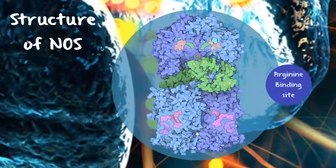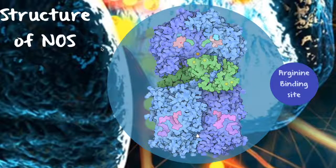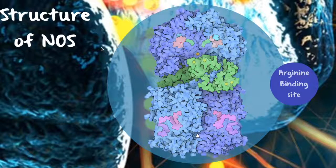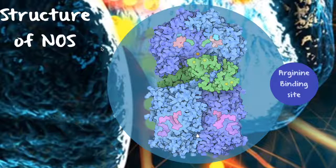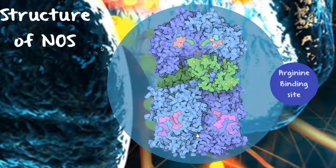Looking at the structure of nitric oxide synthase, all NOS proteins are homodimers and consist of an amino-terminal oxygenase domain and a carboxy-terminal reductase domain. The oxygenase domain creates nitric oxide by adding oxygen to the amino acid arginine, using a heme group to assist with the reaction. The reductase domain feeds electrons up to the oxygenase domain.